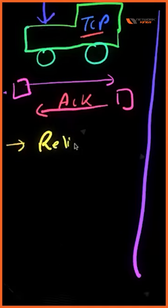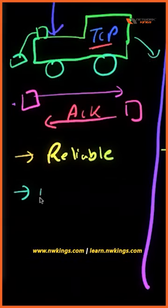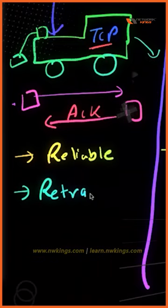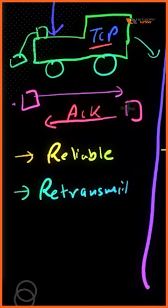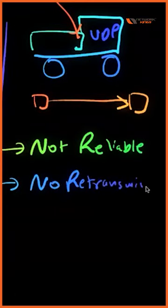Because TCP receives the receipt that the data was delivered, this is reliable, whereas UDP is not reliable. If data is dropped or discarded with TCP, it is going to retransmit the data. But we don't have any retransmission with UDP.